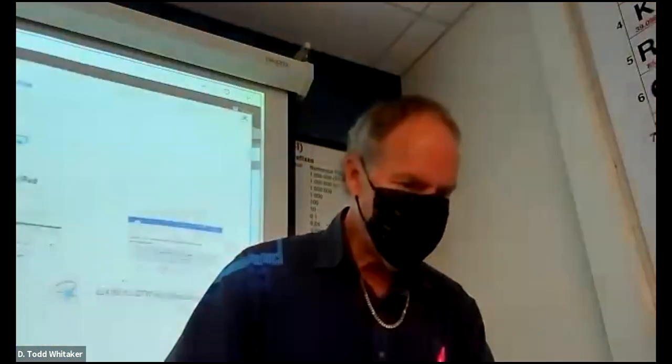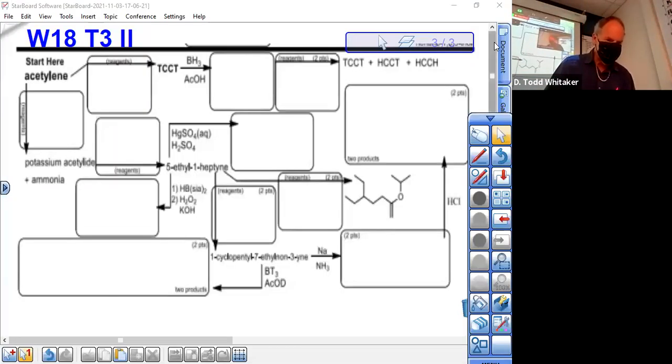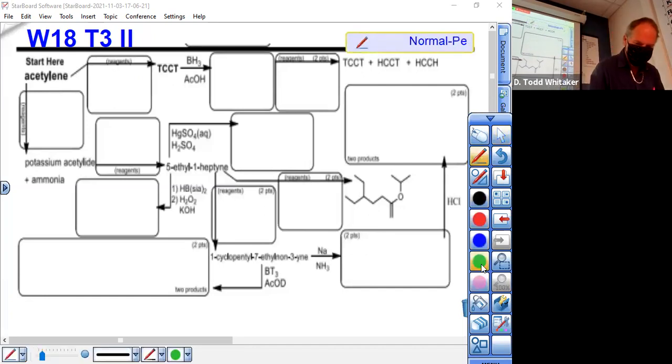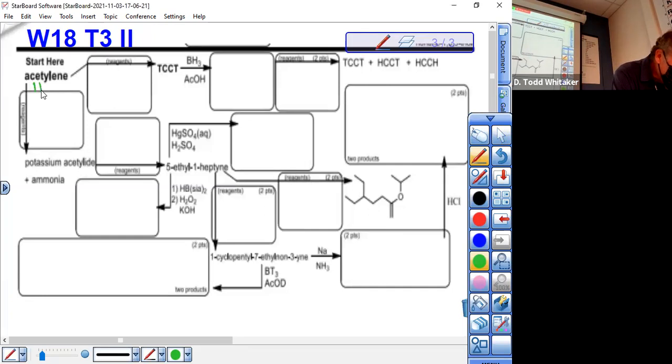We're going to do Winter 18, Test 3, Part 2. This is the alkyne portion of the exam. We have to know acetylene is ethyne. There is no 'ene' in acetylene, it is an alkyne. We're starting there.